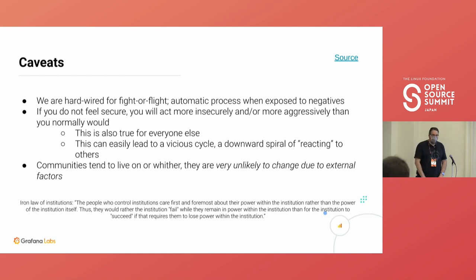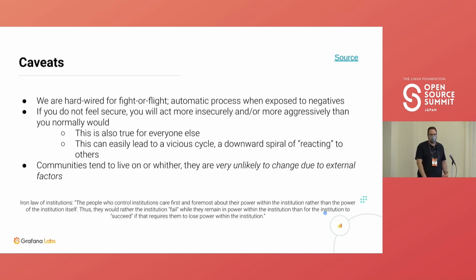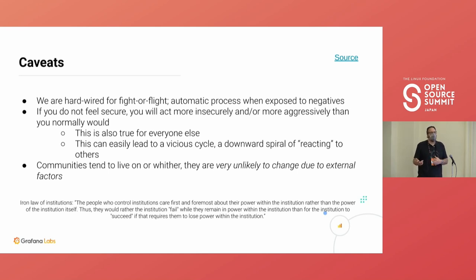Communities tend to just live on, or they wither and die — and that's also fine. But they usually don't change due to external factors. You cannot force a group from the outside to change or do things differently. There's the iron rule of institutions: people in a position of power within a group would much rather see the group dwindle in overall importance than have their own standing diminished. This tells you something about how to choose leaders — the best leaders are happy to step away, not the ones glued to their chair.